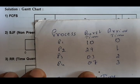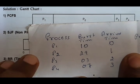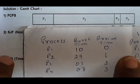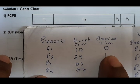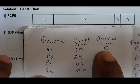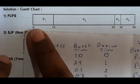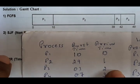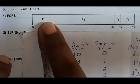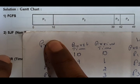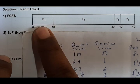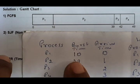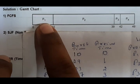So these are the processes, burst time and arrival time. How to draw Gantt chart for FCFS? You have to see first the arrival time. Which processes arrived at time 0? That process you have to start at time 0. So P1 arrived, so P1 you have to start executing. In FCFS it is non-preemptive, so it completely executes — it does not stop in between. So it takes the full 10 milliseconds to execute, because burst time is 10.